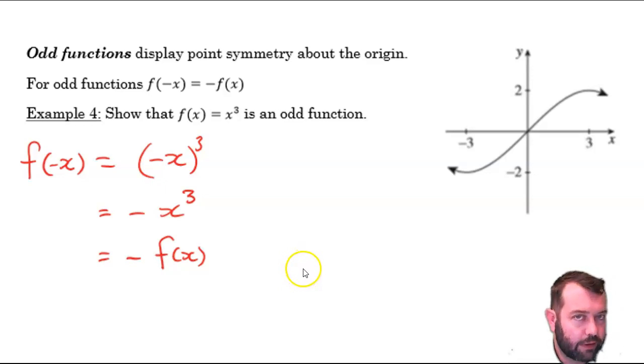Substitute negative x into our original function to test if it's odd or even. And there's every chance that it will be neither, and that's perfectly reasonable. They don't have to be one or the other. That's most typically the case, but sometimes they are one or the other. Even functions when negative x is substituted will simplify to function x, and odd functions when negative x is substituted will simplify to the negative of function x.